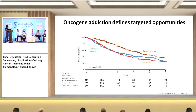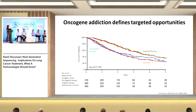Bronchoscopic guided biopsies yield relatively small tissue volumes compared to CT-guided biopsies. That is where the significance of NGS comes in. Earlier we said 'tissue is an issue,' but it is not that much of an issue now. Even through EBUS bronchoscopy, if you are able to take adequate samples, they can be sent for NGS.